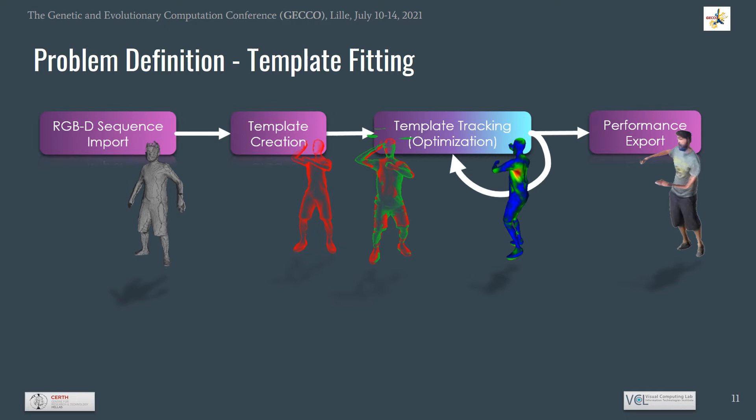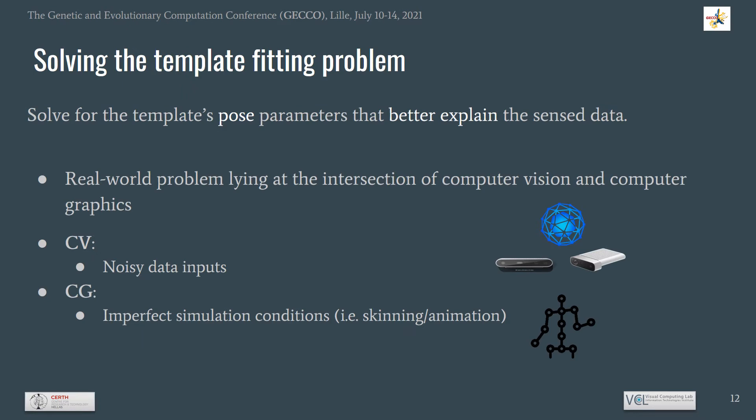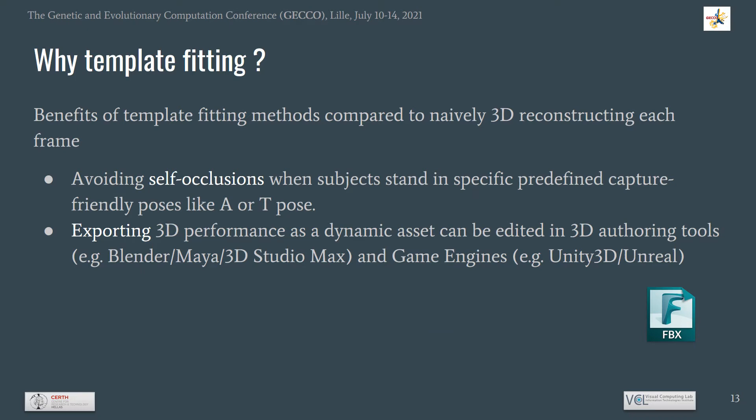For 3D performance capture via template fitting, the goal is to solve for the mesh template's pose parameters that transform the template mesh close to the pose of the performer at each frame. A proxy to the pose of the performer is generated by 3D reconstructing the performer's point cloud data to a 3D mesh. Compared to per-frame reconstruction with standard algorithms, the template fitting method has two major advantages: large areas of self-occlusions may be avoided, and the 3D digitized performance can be easily exported as a dynamic asset for editing in popular 3D authoring tools and game engines.